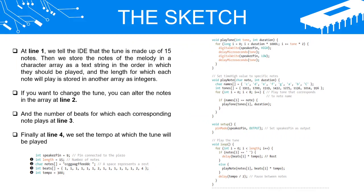The sketch: At line 1, we tell the IDE that the tune is made up of 15 notes. Then we store the notes of the melody in a character array as a text string in the order in which they should be played, and the length for which each note will play is stored in another array as integers.